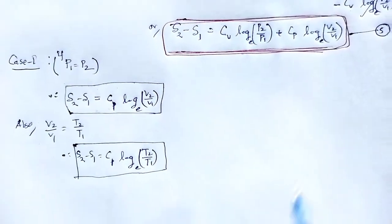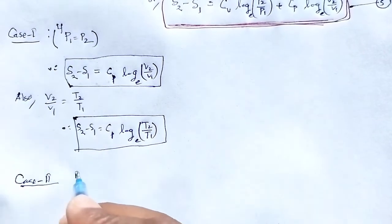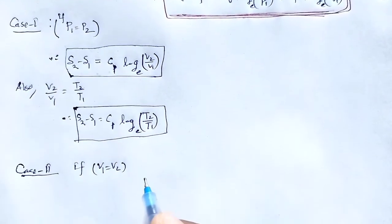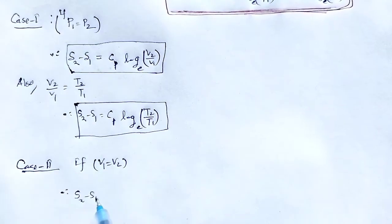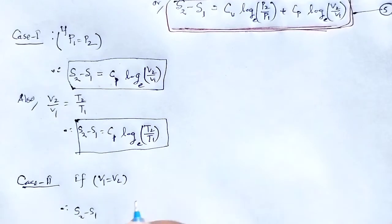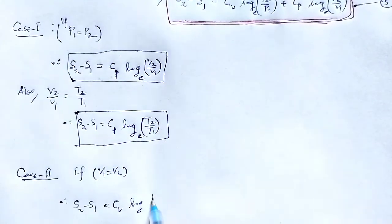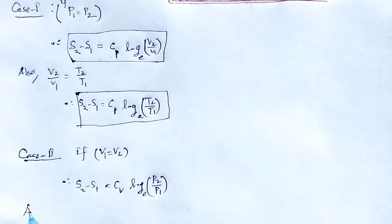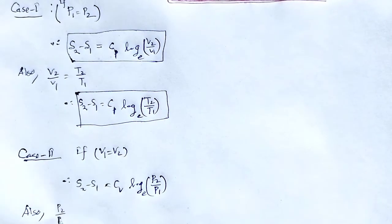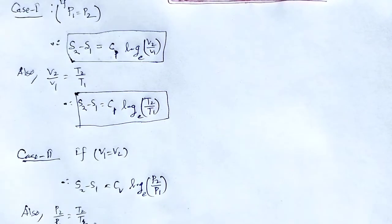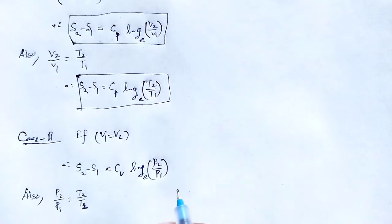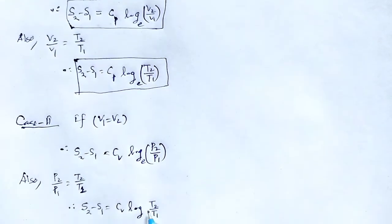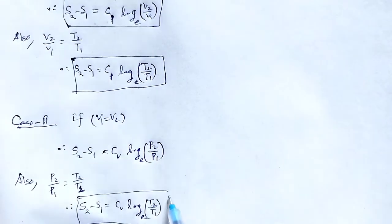Case number 2: if volume is the same, V1 equals V2. Then the volume term is neglected, and S2 minus S1 equals Cv log(P2/P1) base e. Also, since P2/P1 equals T2/T1, we get S2 minus S1 equals Cv log(T2/T1) base e.